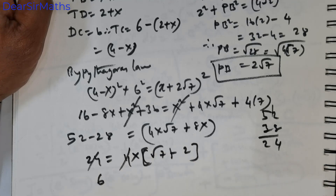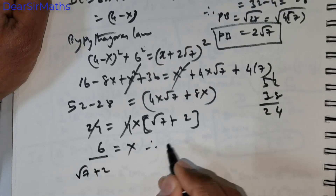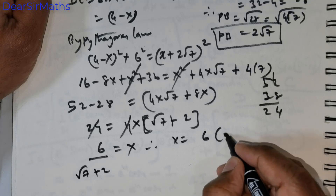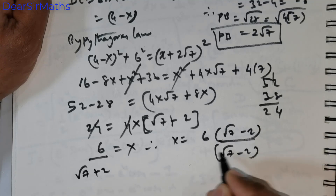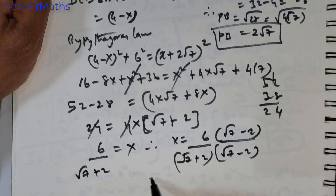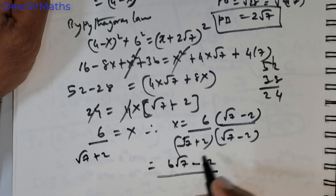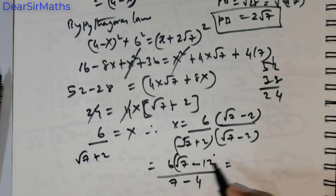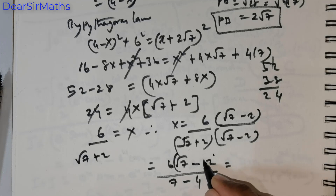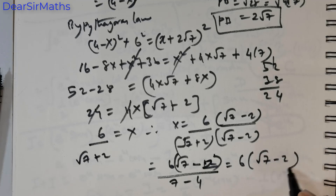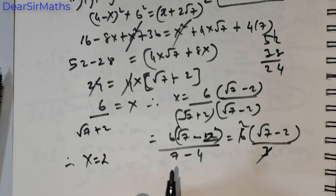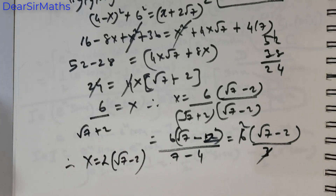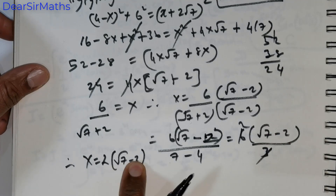To rationalize: multiply and divide by (√7 - 2). We get 6(√7 - 2) divided by (7 - 4), which is 6(√7 - 2)/3 = 2(√7 - 2). Therefore X = 2(√7 - 2). So this is my value of X.